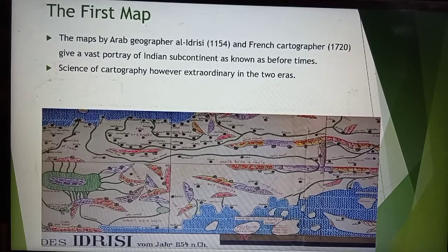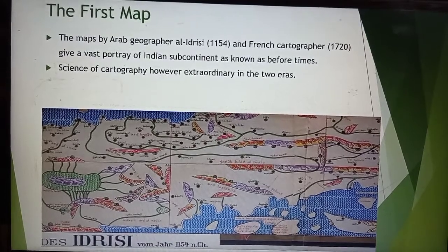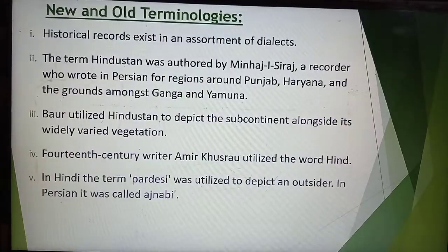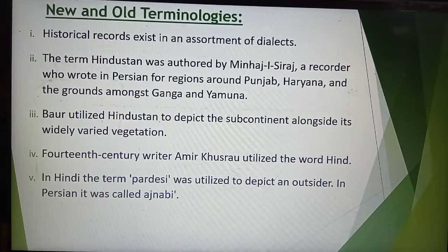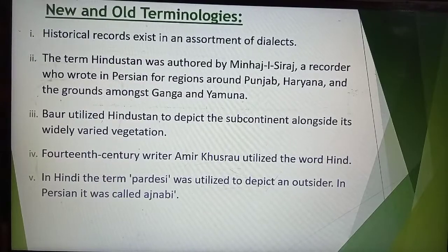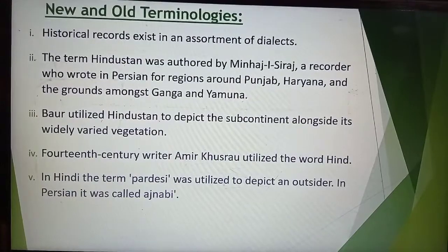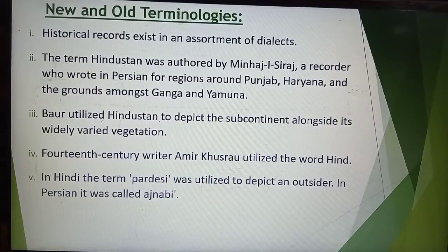More cities, areas, and names are mentioned in the later map, and the names of places are spelled differently — for example, Bengal, Bangal, or West Bengal. Names have also changed throughout history for different reasons. Historical records exist in an assortment of dialects — for instance, Haryanvi is not a language but a dialect of Hindi — and historical records are available in different languages.